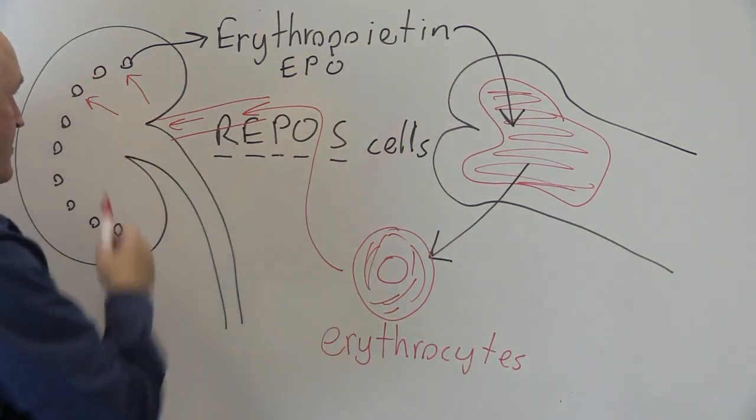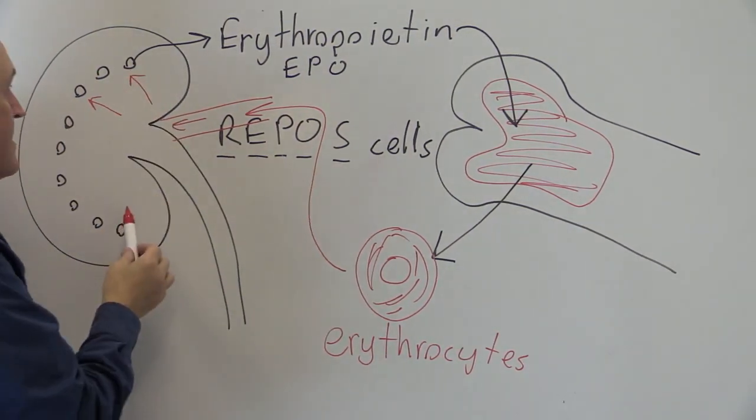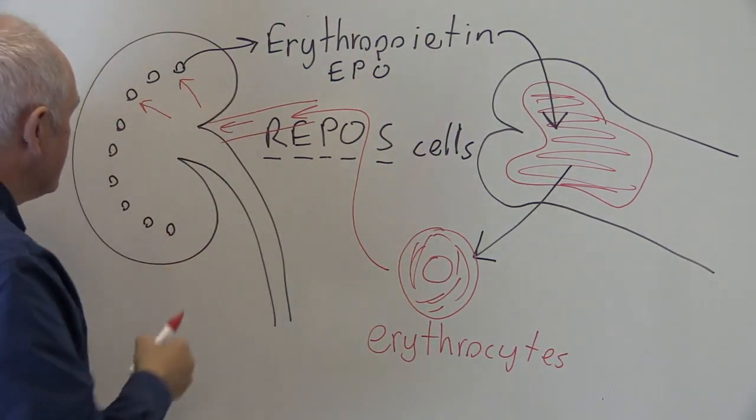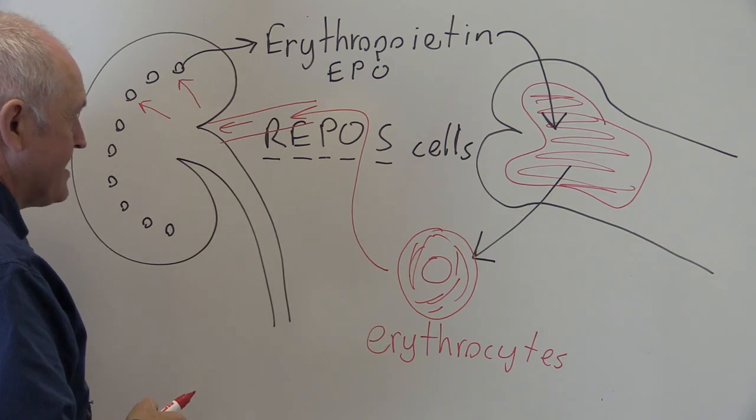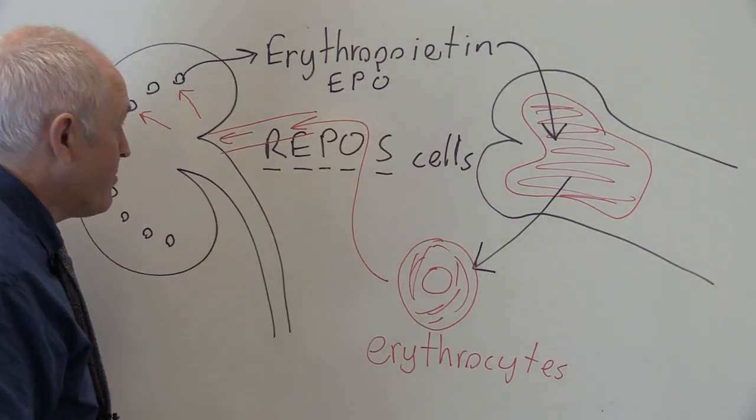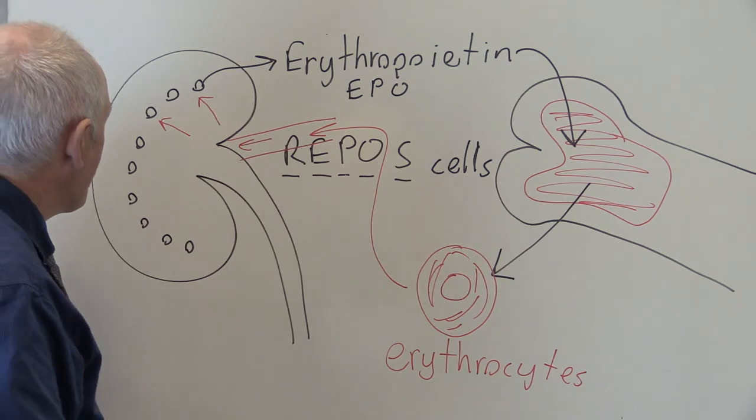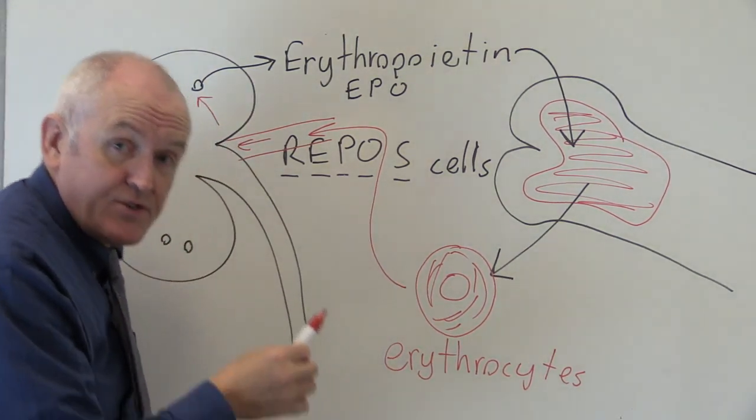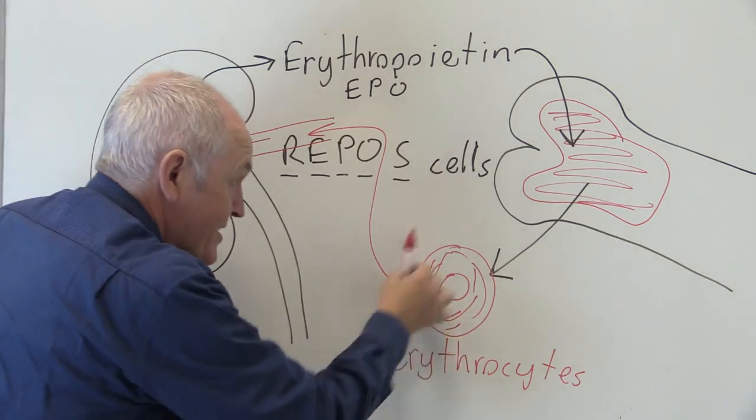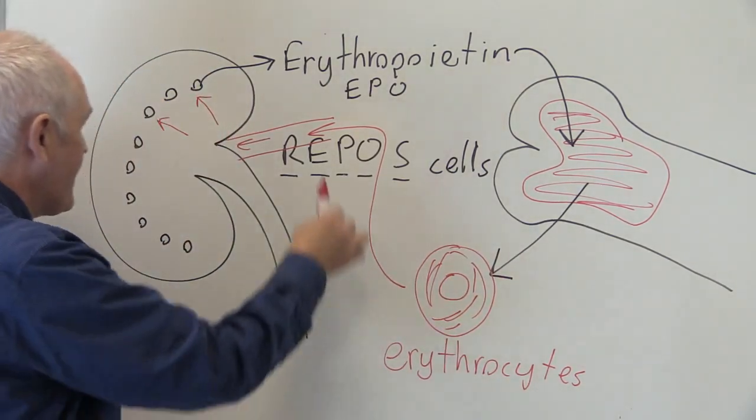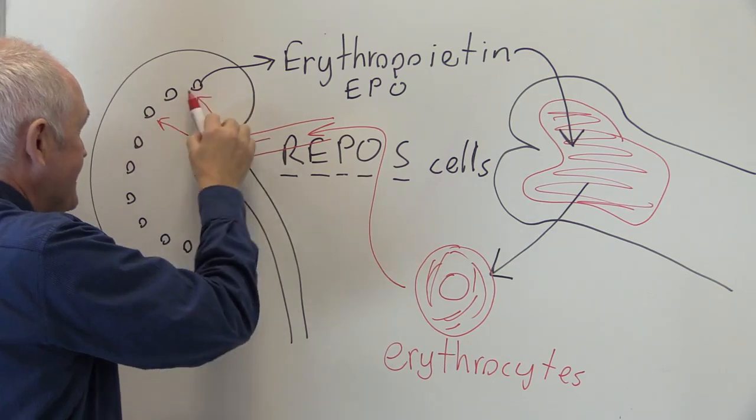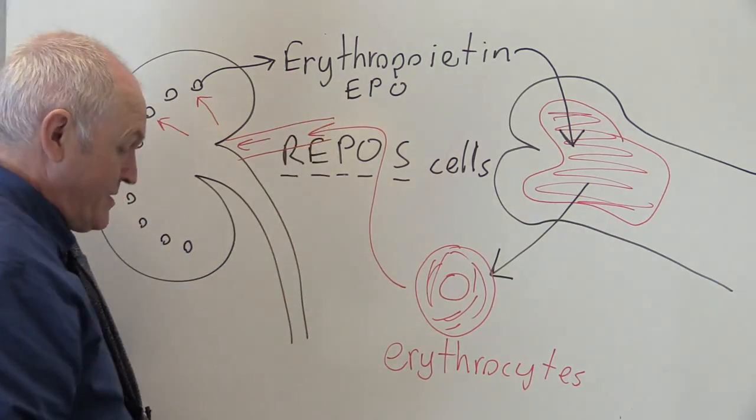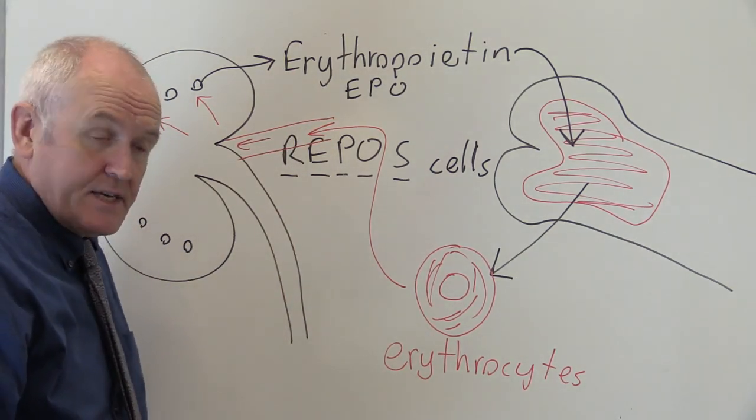They're going to circulate to the REPOS cells in the renal cortex, these fibroblast-like renal EPO producing and oxygen sensing cells. They're going to detect the increased amount of oxygen carried by the increased numbers of erythrocytes. And when they detect that, when they detect increased amounts of oxygen, they're going to reduce the amount of erythropoietin that is produced.